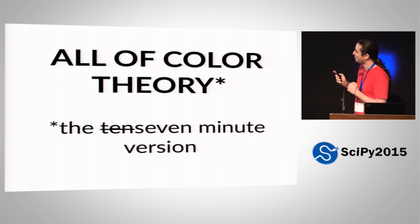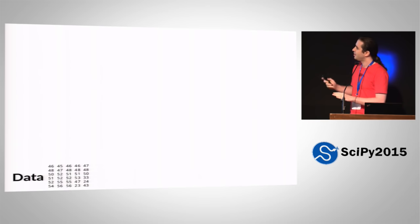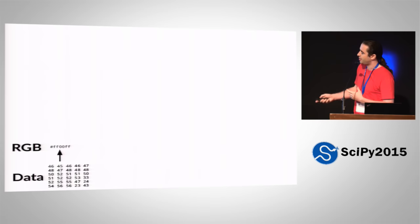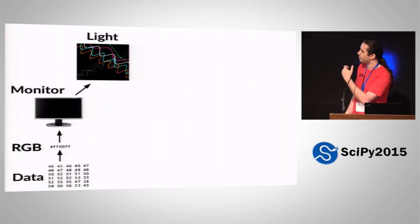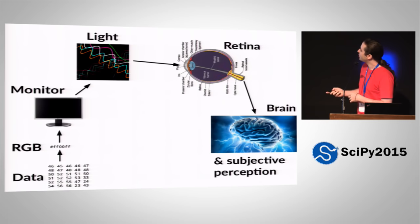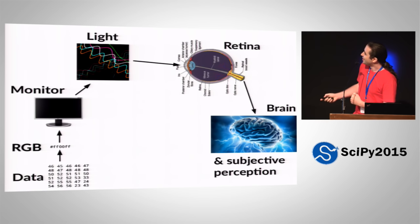Let me teach you color theory — just the basics, but it's actually not that complicated. We'll do it straight up from the basics. What happens when you display something on screen? You have some data, you put it through a color map, you get RGB values, that's a signal to the monitor, the monitor spits out some photons, the photons hit your eye — specifically the retina, which creates an electrochemical signal. That goes to your brain, and somehow gets turned into subjective perception.